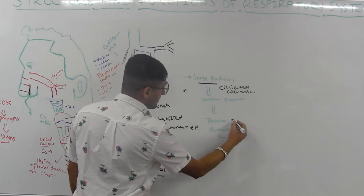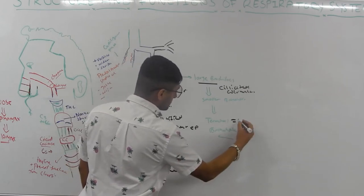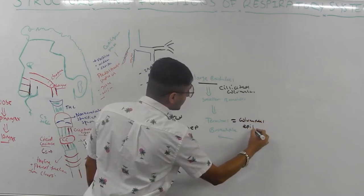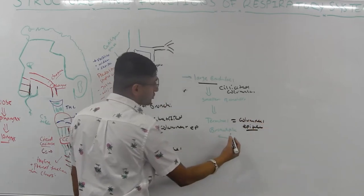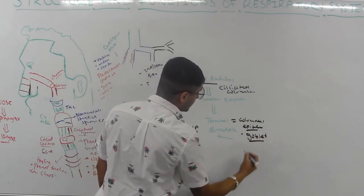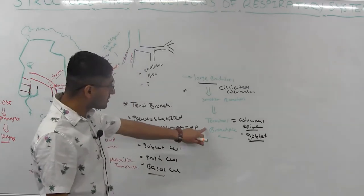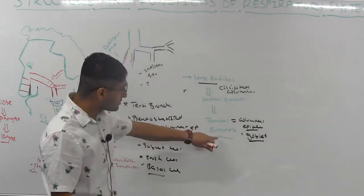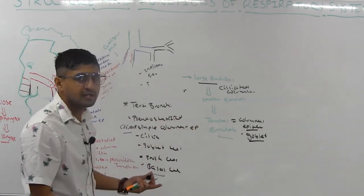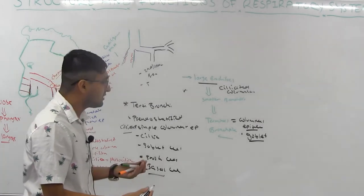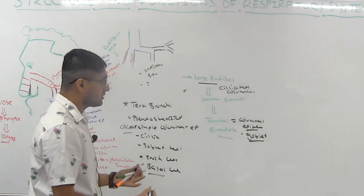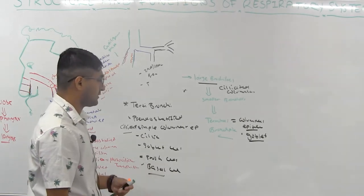In the small and terminal bronchioles, you're going to see columnar epithelium. A key feature is that terminal bronchioles have no goblet cells. The lining is columnar epithelium and may or may not have a few cilia.